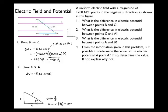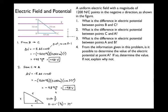From C to A: we need the angle between the electric field and the displacement along the hypotenuse. Using sine — opposite over hypotenuse — sinθ = 3/5, so θ = arcsin(3/5) = 37°. Plugging in: 1200 N/C times 0.05 m (the 5 cm hypotenuse) times cos37°, gives a change in electric potential of −48 volts from C to A. Moving from C to A, electric potential drops by 48 volts.